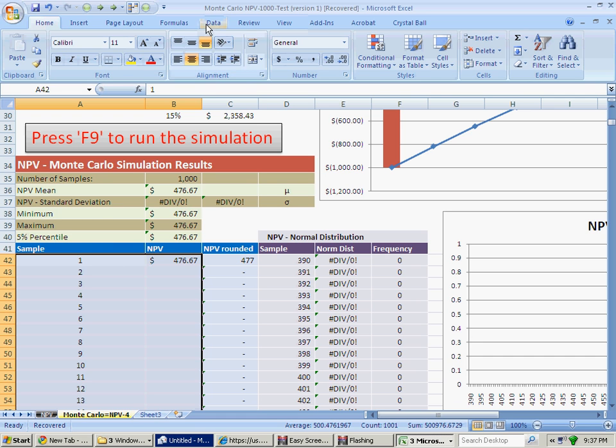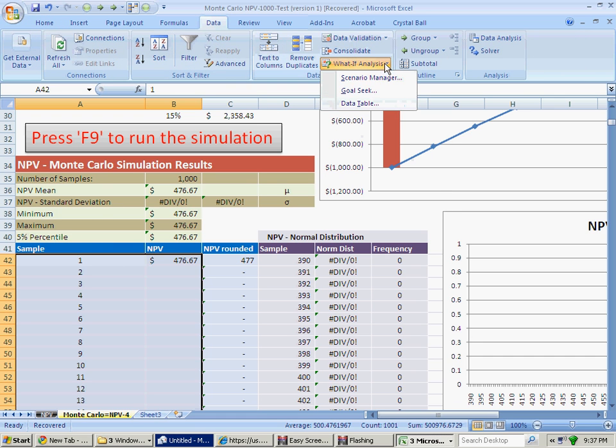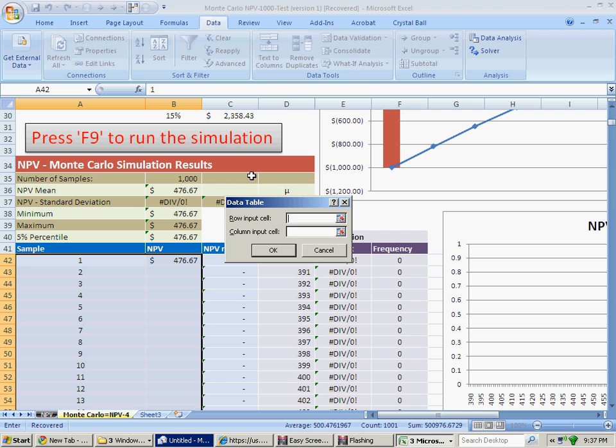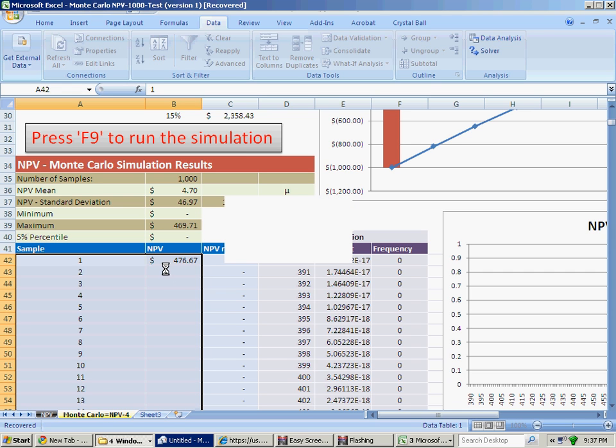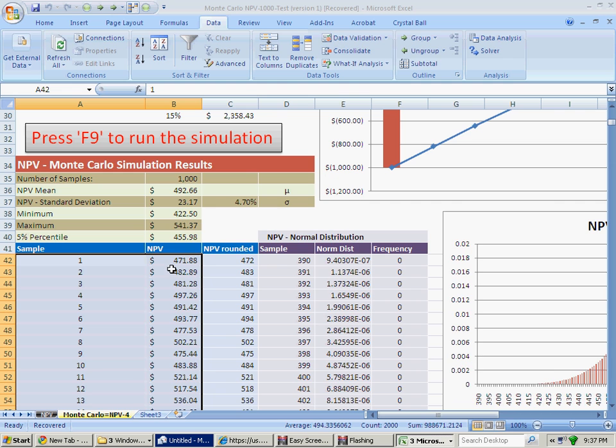So we are going to Data, we are going to What-If Analysis, Data Table. And my column input is this net present value. And here we have automatically we are going to fill out all the cells from number two to a thousand with a new value of the net present value calculated from the spreadsheet above.